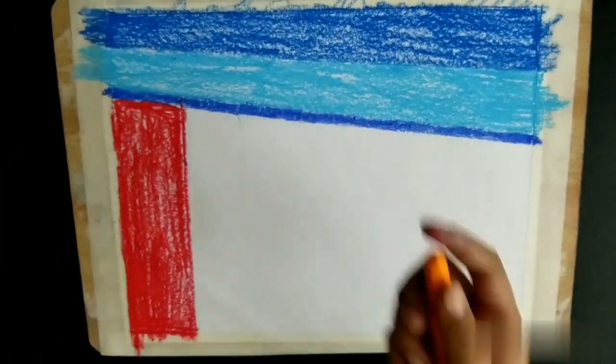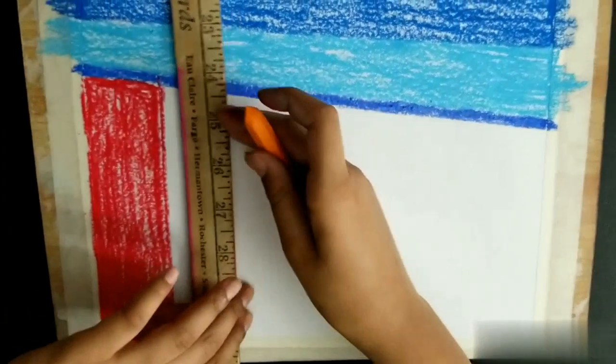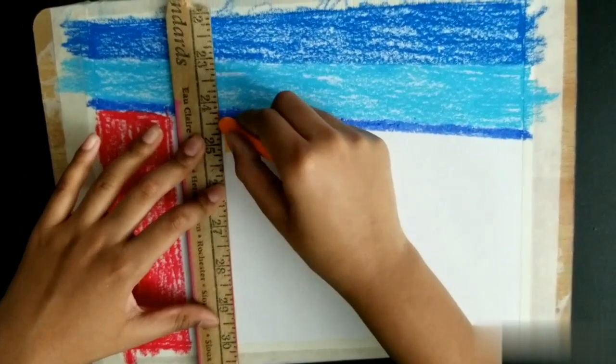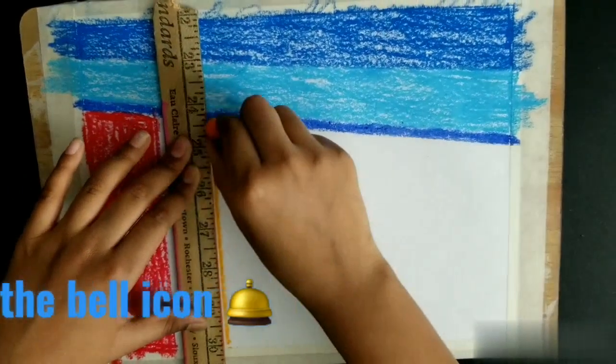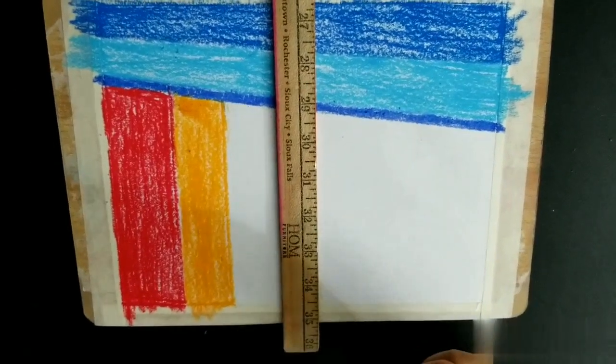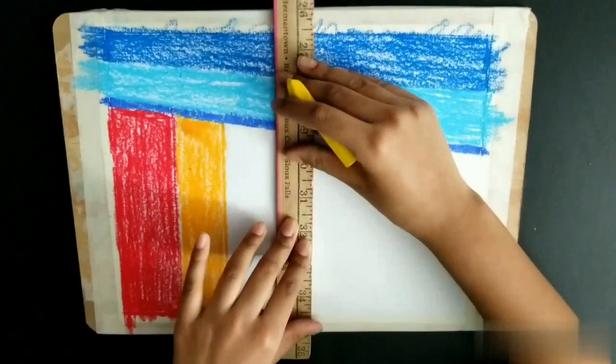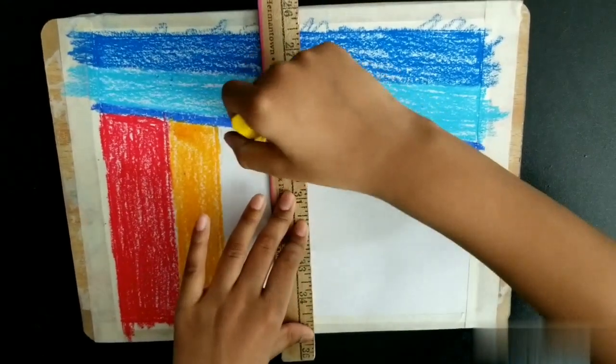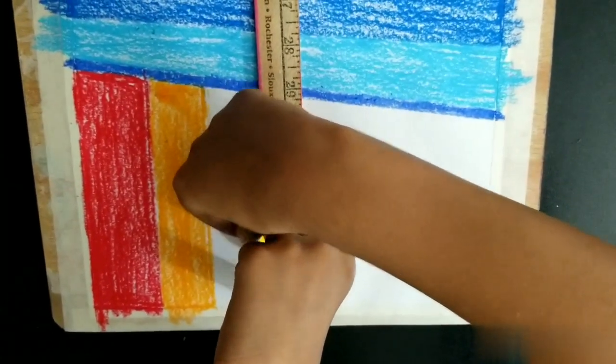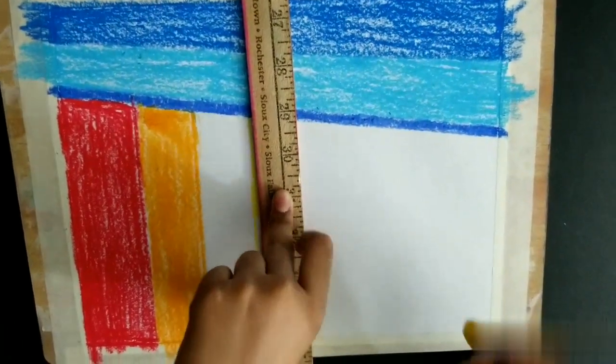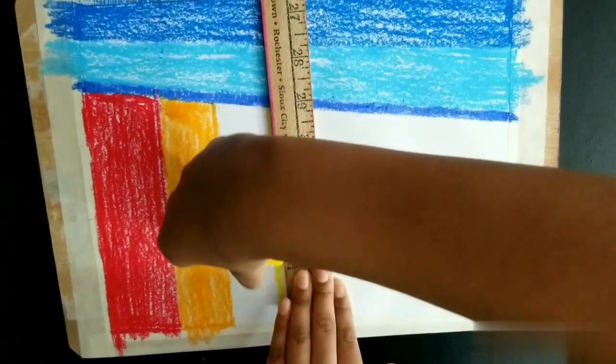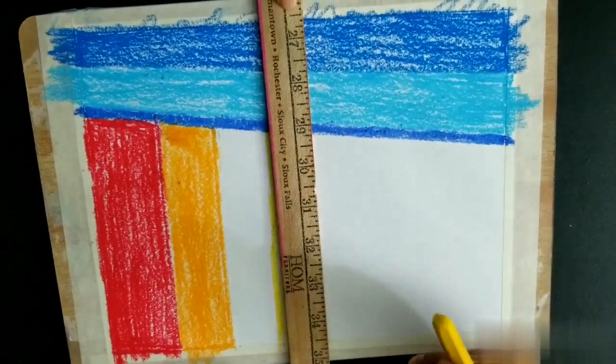After you color it in, now we need our orange and a ruler. We do the same thing what we did here. After you color it in, now we need our yellow and draw the line.